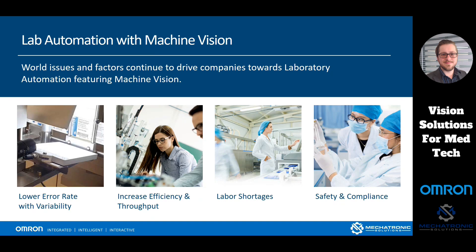And finally, safety and compliance. With automation, we are able to drive a better level of safety and compliance, especially when we talk about required compliances through government agencies. Automation lets us set exactly what's going to happen — you're never worried about a robot showing up after having an all-nighter. That robot is always going to work the way it needs to work.